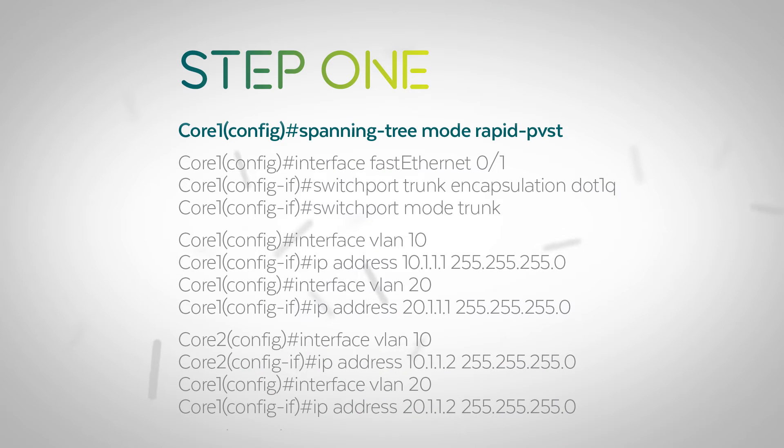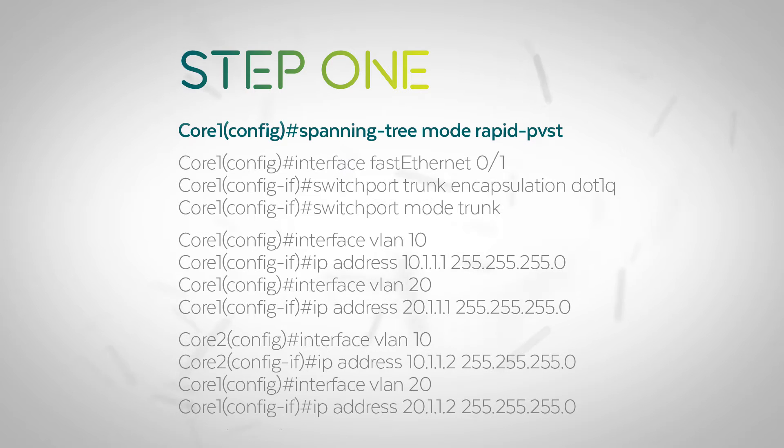In order to configure basic connectivity for a classic Layer 2 deployment, here's a quick overview of what needs to be done. Note, we are only showing the bare minimum required for deployment. An optimized configuration will require far more configuration of each protocol or feature. First, we have to configure each switch to run the Rapid Per-VLAN Spanning Tree Plus protocol, which will greatly improve the time it takes spanning tree to converge around a failure.